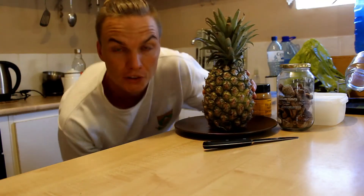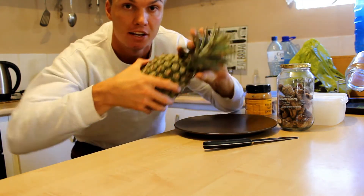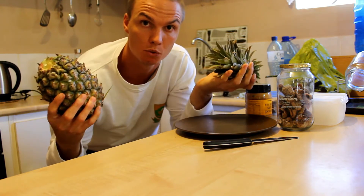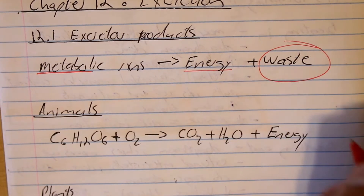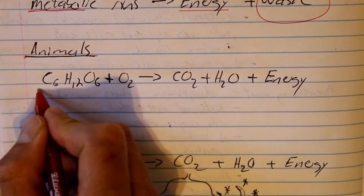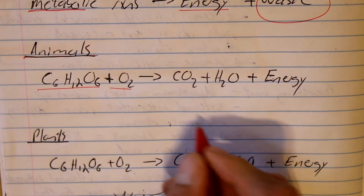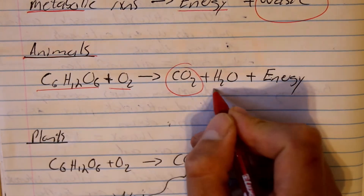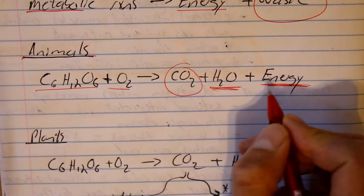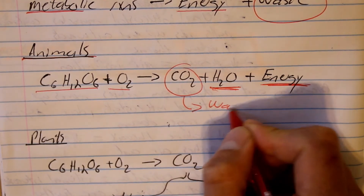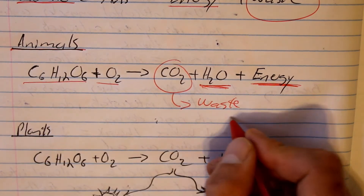Excretory products are formed by metabolic reactions which occur inside our bodies. These produce energy as well as waste products. You can think of metabolic reactions being similar to making food — you have the product which you use, and waste which you need to eliminate. The process of respiration in animals results in glucose being combined with oxygen to produce carbon dioxide, water, and the energy that the animals need. The animals can use the water and the energy, but carbon dioxide is a waste product that can be eliminated by our breathing.